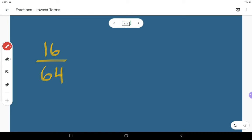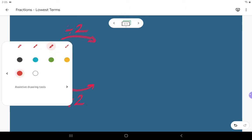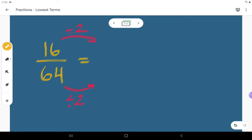The easiest one to notice with 16 and 64 is they are both even numbers. So I would divide numerator and denominator both by 2 because they are both even. That's going to give me 8 over 32.